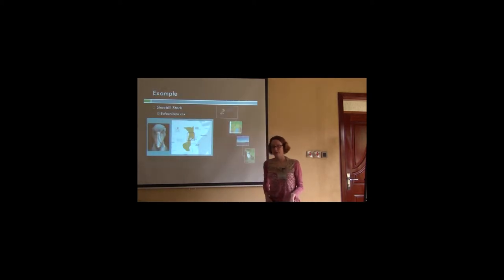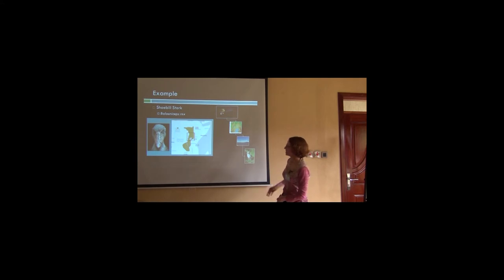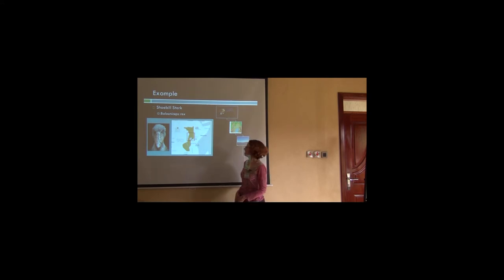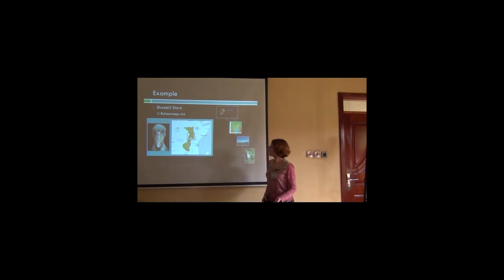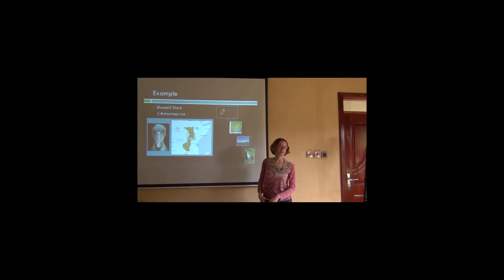We're going to use the example of the shoebill stork. This is the range of the shoebill stork according to the IUCN polygons. This bird likes freshwater swamps. We're going to take a look at how you can use remote sensing data to observe these environmental variables across the region and what might be important for these storks in this area, and what's going on across our entire study region.